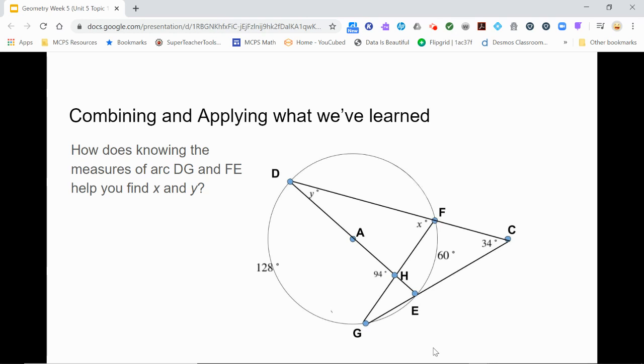Angle DFG is an inscribed angle that intercepts arc DG. So X is half of 128 or 64. Likewise, angle FDE is an inscribed angle that intercepts arc FE. So Y is half of 60 or 30 degrees. Did you get them right?